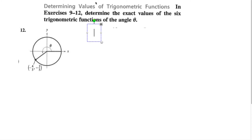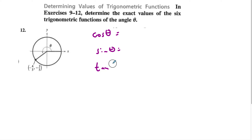We'll have to figure out cosine, sine, and tangent — we'll start there. Please bear in mind, this is a coordinate on the circle for that angle, which means the cosine is simply the x-value, so it's negative 4/5. The sine would be the y-value, so it's negative 3/5.